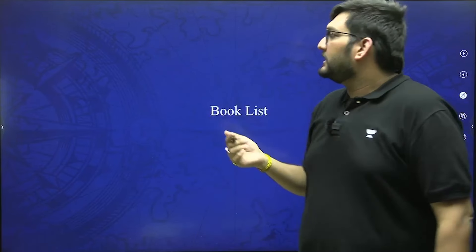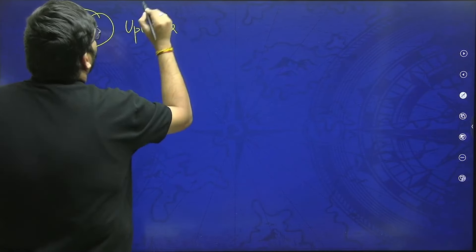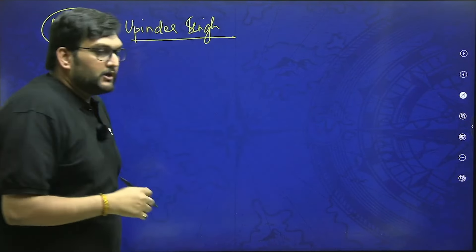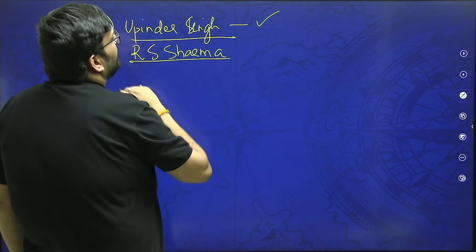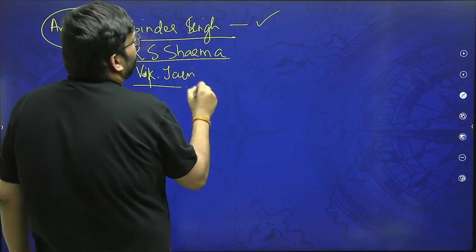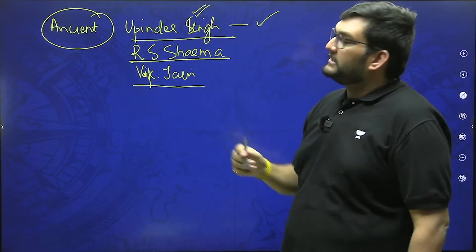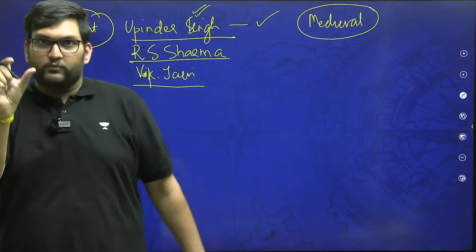Now comes the million dollar question — the book list. If you are joining me, it is an irrelevant question because you will automatically get everything in one source. But just for understanding: for ancient India you would have to read Upinder Singh's History of Ancient and Early Medieval India — one of the most important books for NET and UPSC both. This book along with R.S. Sharma and B.K. Jain are the three books for ancient. Upinder Singh is a very bulky book. Thereafter in medieval, we have Satish Chandra — Volume 1 and Volume 2.